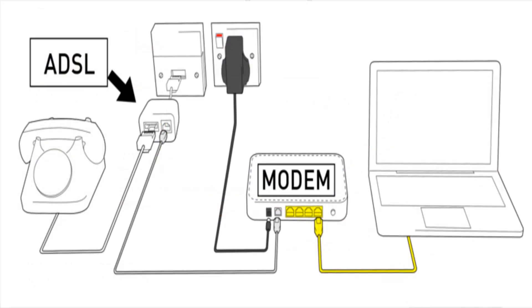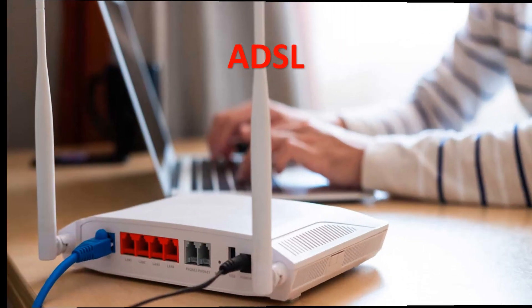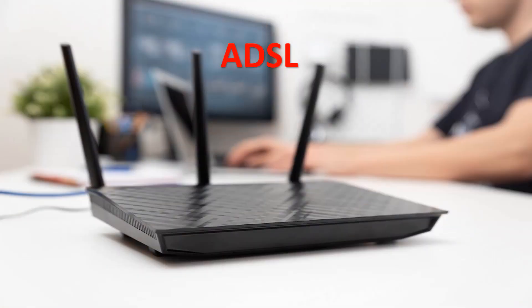ADSL offers a fixed monthly cost. It has lower pings in online games and does not come with more dropped connections. It offers high-speed internet access — you can download documents, web pages, and send email faster. You can view or send real-time audio and video files very quickly. Downloading speed is higher than uploading.